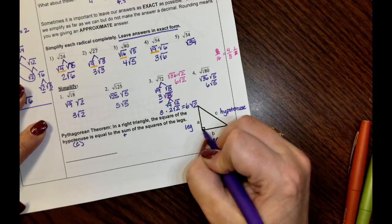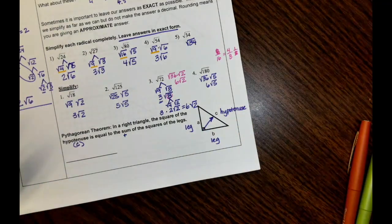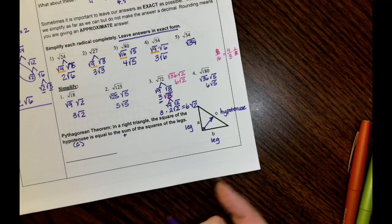The hypotenuse is the longest side, it is directly across from the right angle. It's the largest side, the longest side, because it's across from the largest angle.